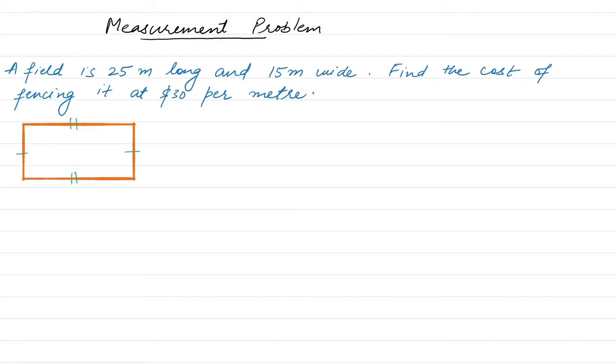25 meters long is the length of the rectangular field given and 15 meters wide, or we can say the width or the breadth of the rectangular field is given. Now we need to find the perimeter for this one first.